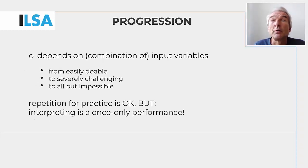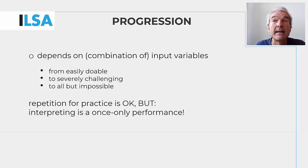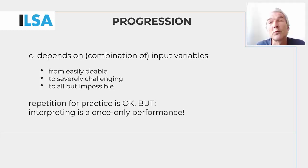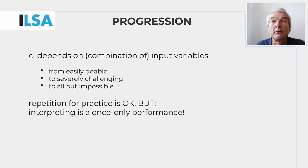The overall goal in the skill acquisition process for simultaneous interpreting can be reached only step by step through practice using appropriate materials. The order in which the various practice materials in this unit are used should reflect a progression from most easily doable to severely challenging and even all but impossible. The series of exercises therefore begins with material that features a particular source of difficulty so that certain strategies for dealing with it can be practiced. This would be done for each source of difficulty, one at a time. In fact, however, most authentic or realistic practice materials involve a mix of problem triggers, so the most challenging material can be assumed to comprise a large number of challenging input features.